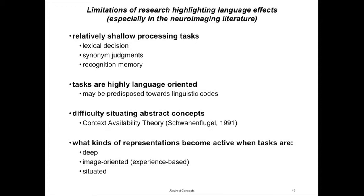Now there are some limitations of this work, especially the neuroimaging work, that are important to bear in mind when drawing conclusions about the role of language in representing abstract concepts — because pretty much what people want to conclude is that's how these concepts are represented. One thing to note is that the tasks used are relatively shallow, like lexical decision, synonym judgments, and recognition memory. So it's not like people are doing deep conceptual processing of these concepts in the way I started talking about, like in law cases and paradigms of human activity. These tasks are also highly language-oriented — simply presenting people with isolated words, no pictures, no other kinds of experience.